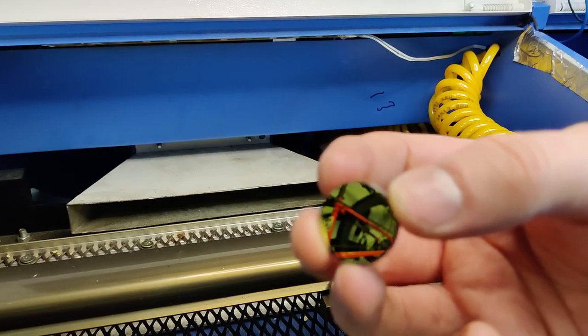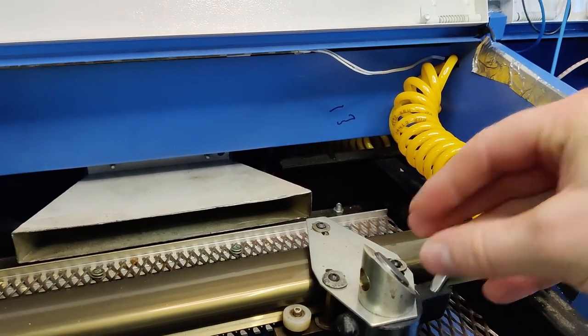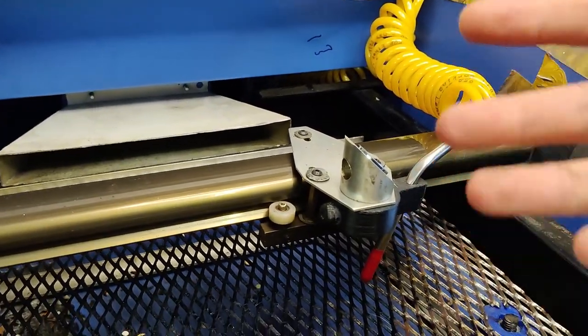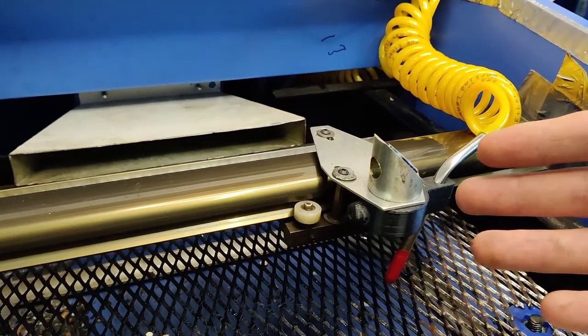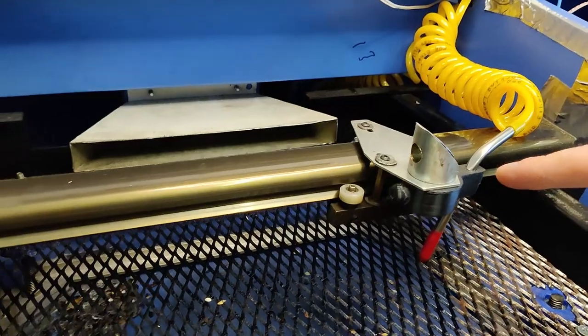Another big thing you need to bear in mind is you need to clean these very regularly because as you burn materials the smoke residue from the material actually embeds itself on the mirrors and the lens. By keeping them clean you're going to get a more powerful cut through your machine.